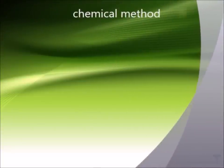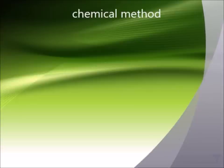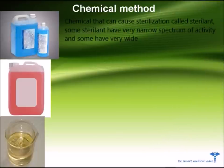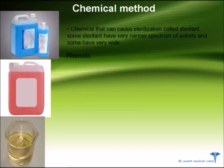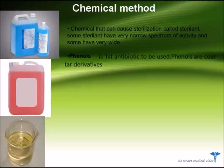The second method of sterilization is the chemical method. Chemicals that can cause sterilization are called sterilants. Some sterilants have a very narrow spectrum of activity and some have a very wide spectrum. Phenols — phenols is the first antiseptic to be used; phenols are coal tar derivatives.